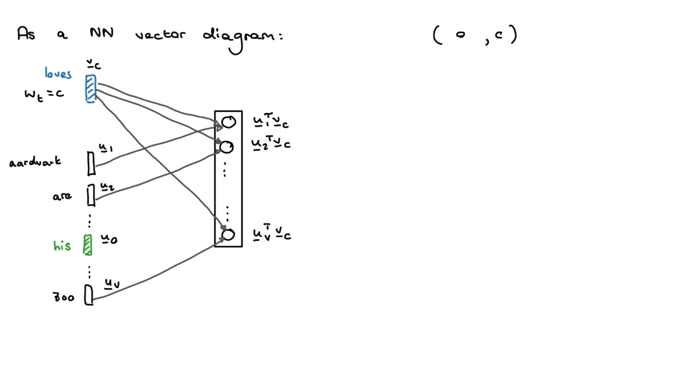Somewhere in the middle here we have the dot product of our current context word with our center word. So somewhere here we've got the dot product of this embedding with that embedding—that is UO transpose times Vc. Now you get all of these dot products and stack them all into one big vector. This vector has values between minus infinity and infinity, and there are capital V of them.